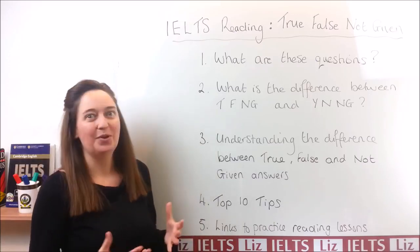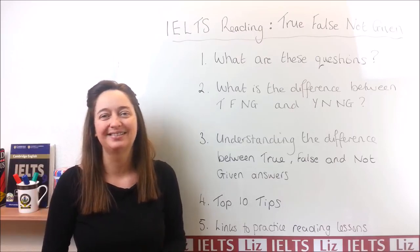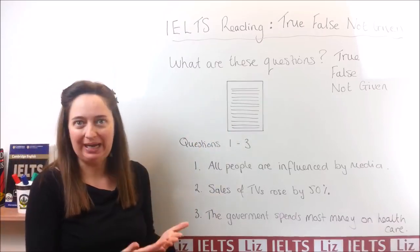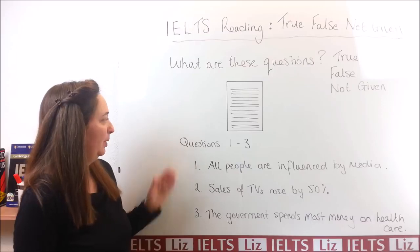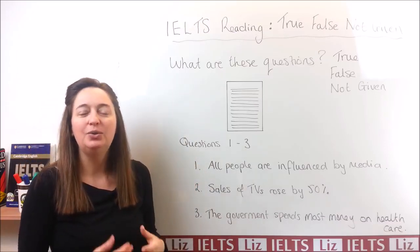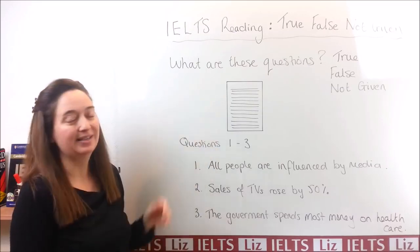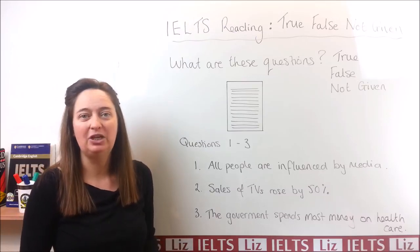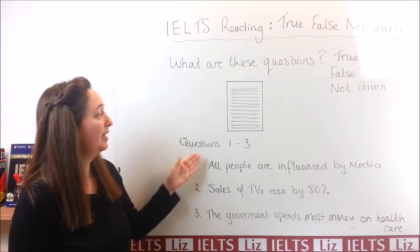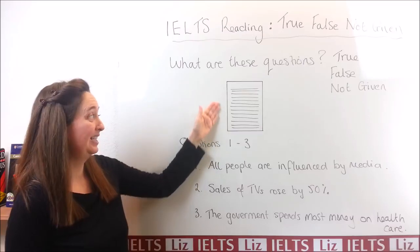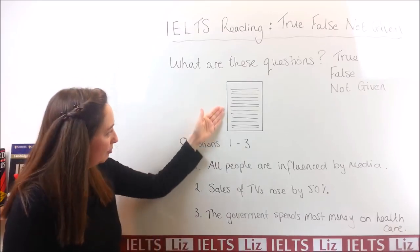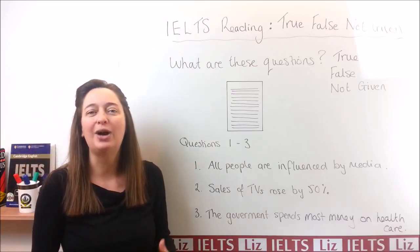So let's start with the first question: what do we have to do for these types of questions? Here is an example of True, False, Not Given questions. This would be your reading passage — the article that you need to read — and there will be questions. Each question is a statement. For example: 'All people are influenced by media.' You need to read through the passage and decide if this information is in the passage. If you can find the information, the answer is true. If the information in the passage is opposite to the statement, it's false. And if the information cannot be found, your answer is not given.